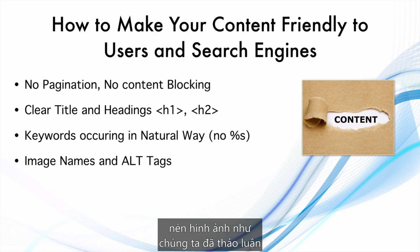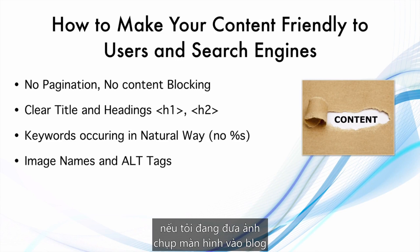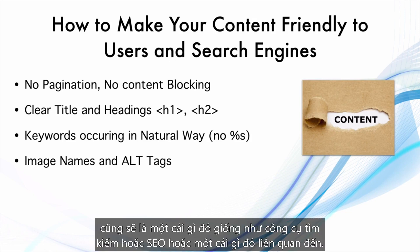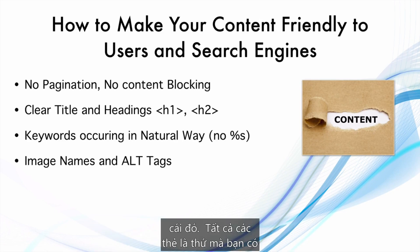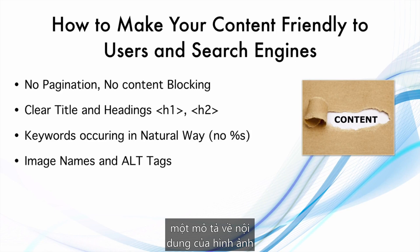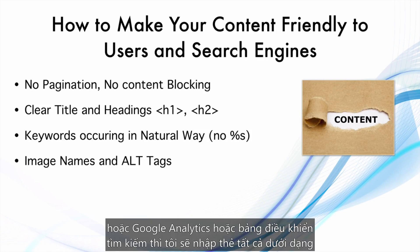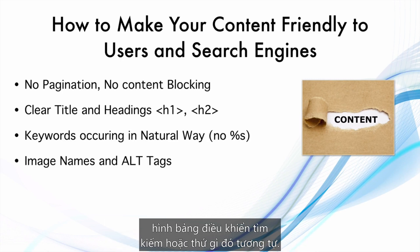If you are uploading images, make sure you compress them as discussed before, and make sure the image file names are relevant to the article. For example, if writing about search engines, the file name should be something like 'search-engines' or 'seo'. Alt tags can be set inside WordPress when you upload an image. Alt tags are alternate tags — when the image does not load, they provide a description. For example, a Google Analytics screenshot would have the alt tag 'google analytics screenshot'.